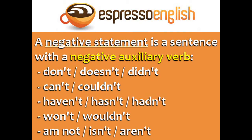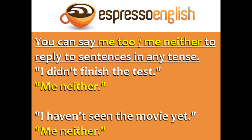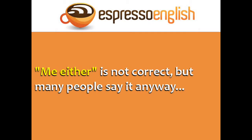A negative statement is a sentence with a negative auxiliary verb: don't, doesn't, didn't, can't, couldn't, haven't, hasn't, hadn't, won't, wouldn't, am not, isn't, or aren't. You can say 'me too' or 'me neither' to reply to sentences in any tense. For example: 'I didn't finish the test' — 'me neither'. 'I haven't seen the movie yet' — 'me neither'. Note: 'me either' is not correct, but many people say it anyway.